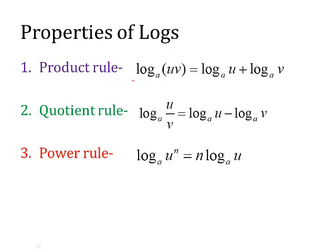So the first rule is the product rule. What you notice is a log base a of (uv) equals log base a of u plus log base a of v—that can be any two things multiplied together. The expanding property says you can take the log base a of u and add it to the log base a of v. So you can expand it using an addition sign, that's the product rule.